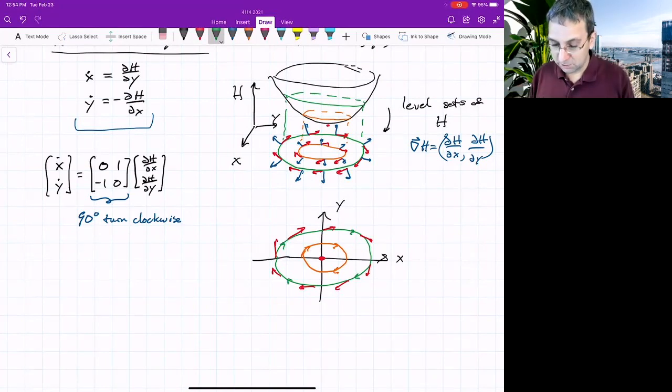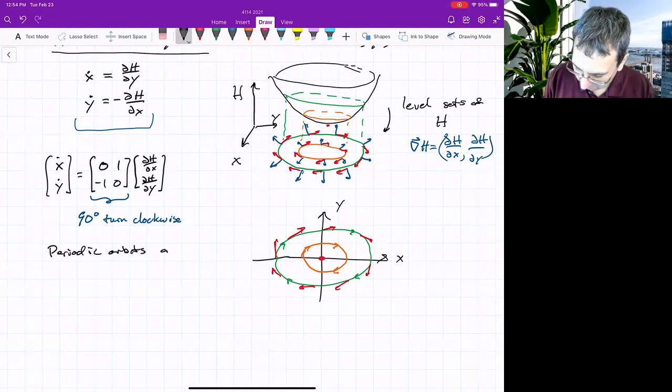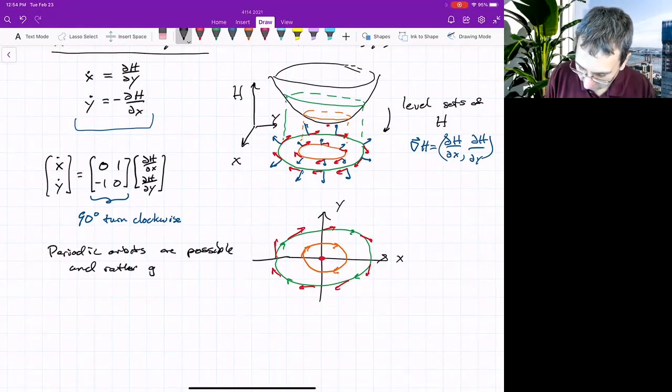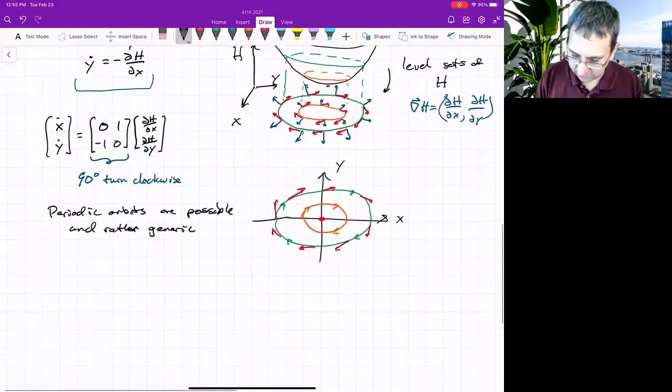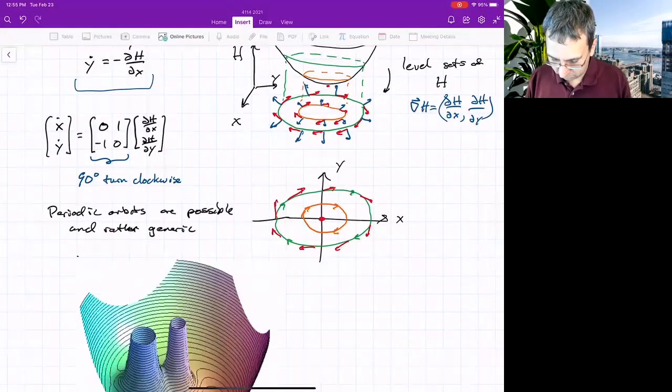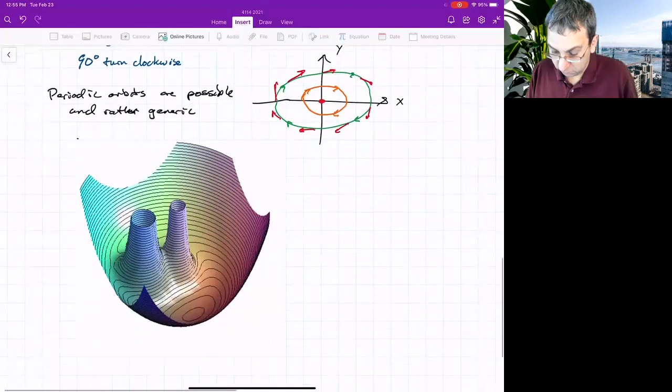We're talking about two-dimensional Hamiltonian systems. Periodic orbits are possible and rather generic. We could plot different kinds of functions and get other things. Here's one.